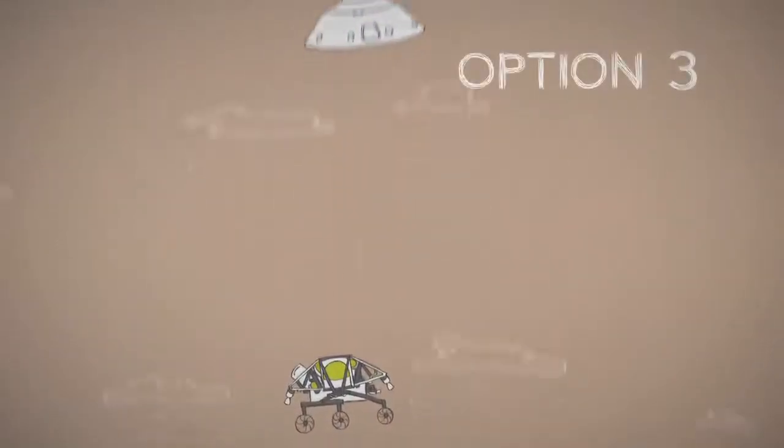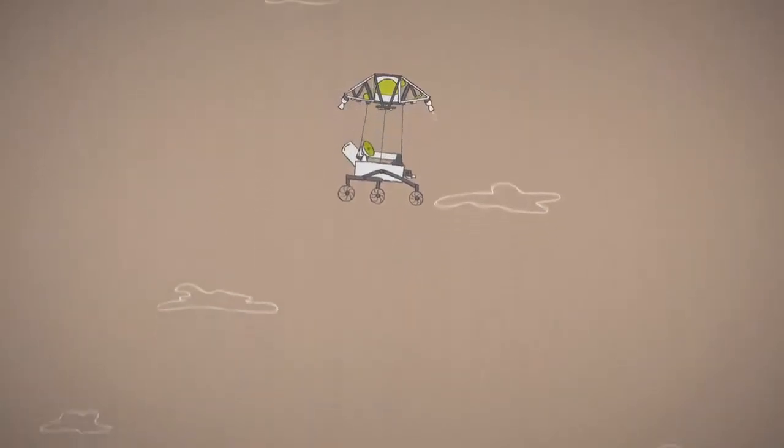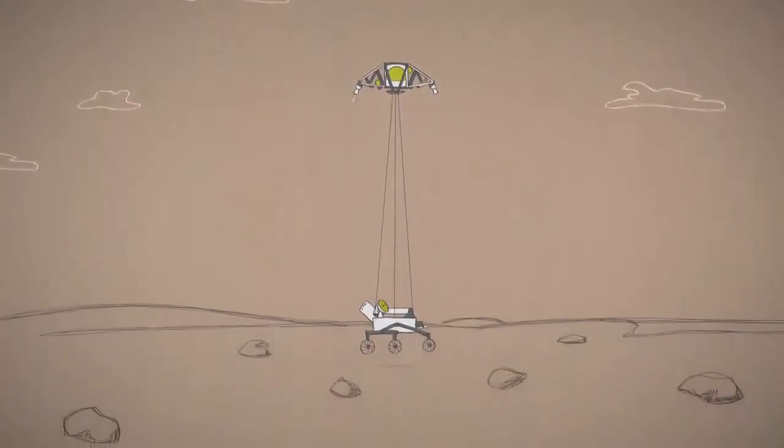Or with a large heavy rover, use a big jetpack to slow down to under two miles an hour. Then gently lower it on cables to land on its wheels.